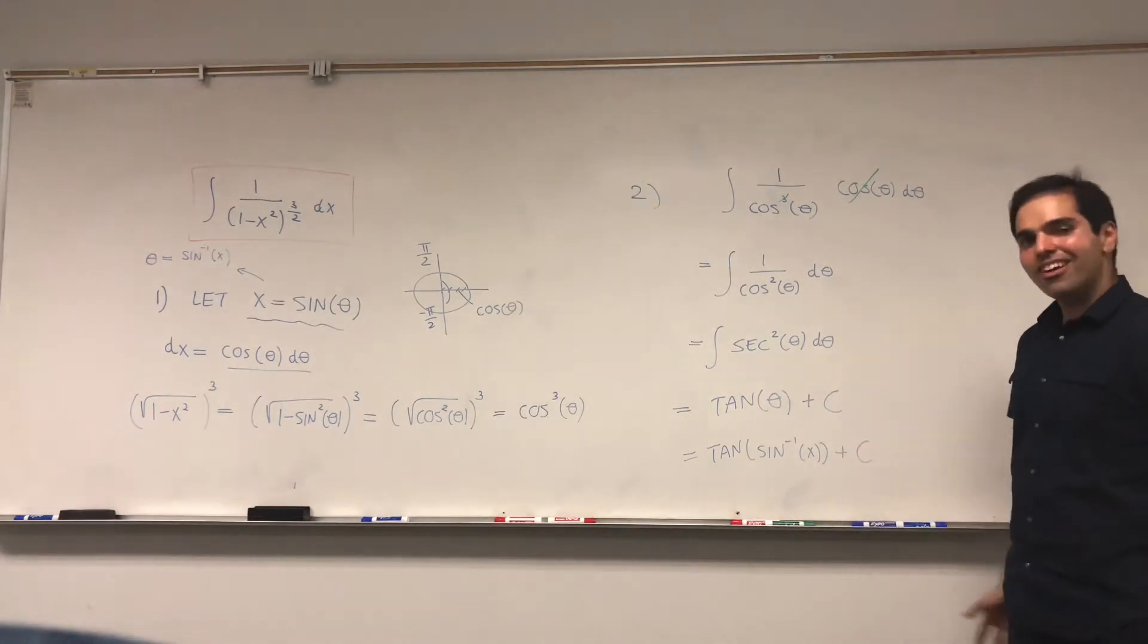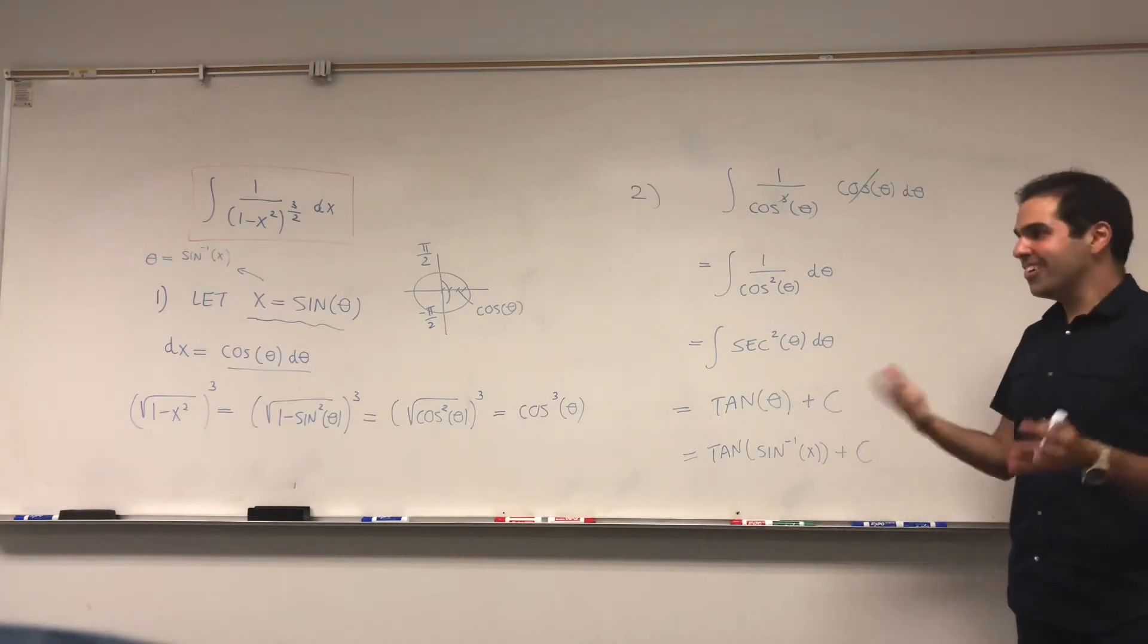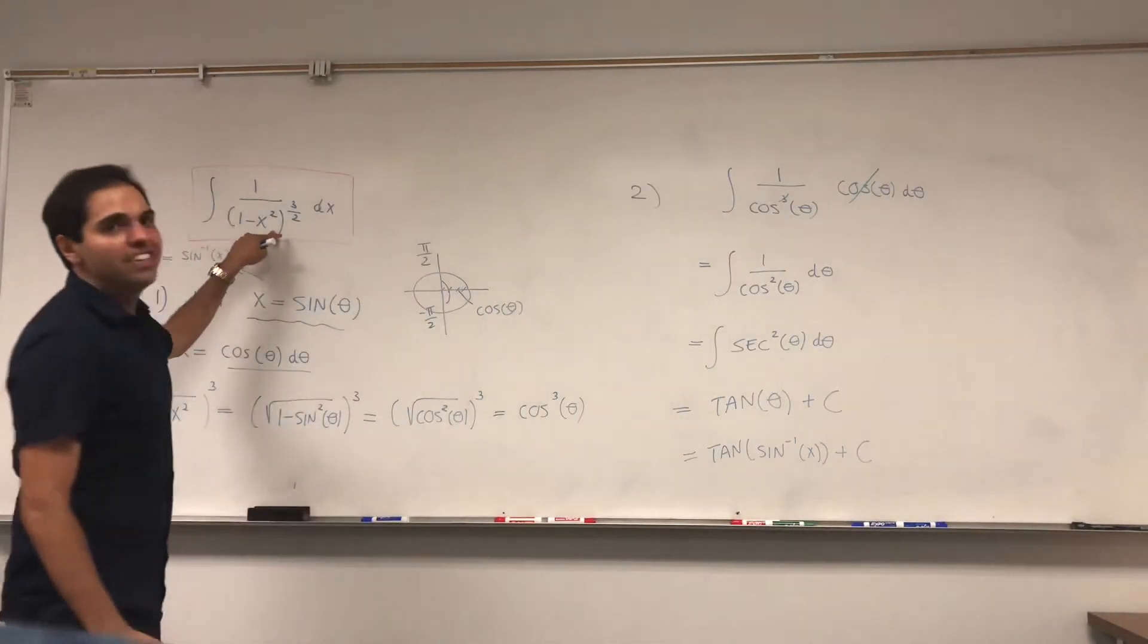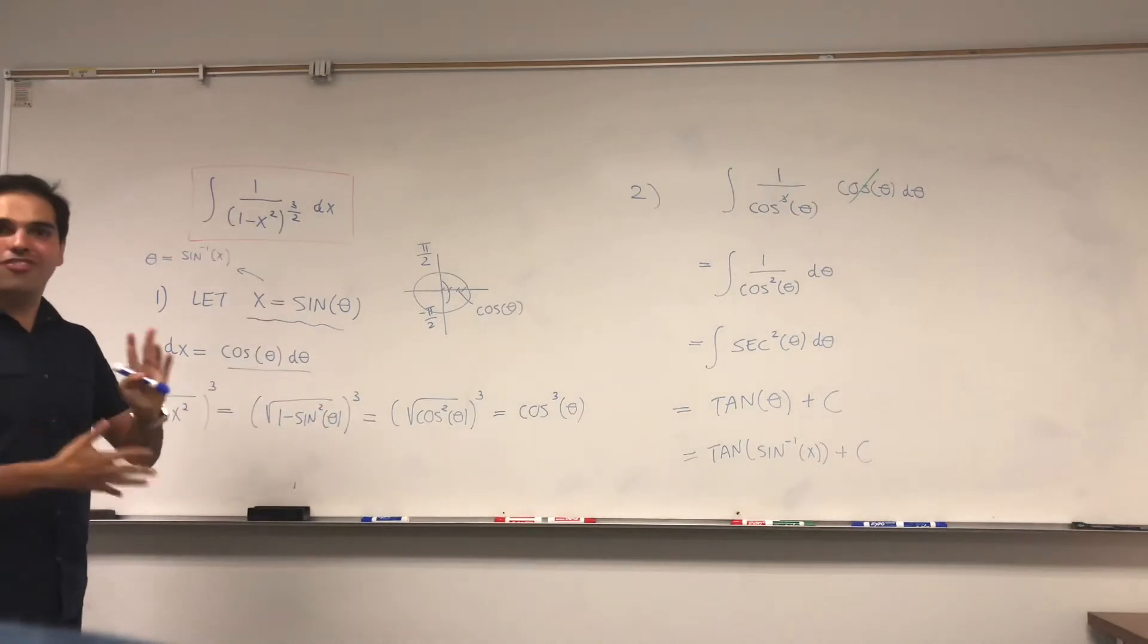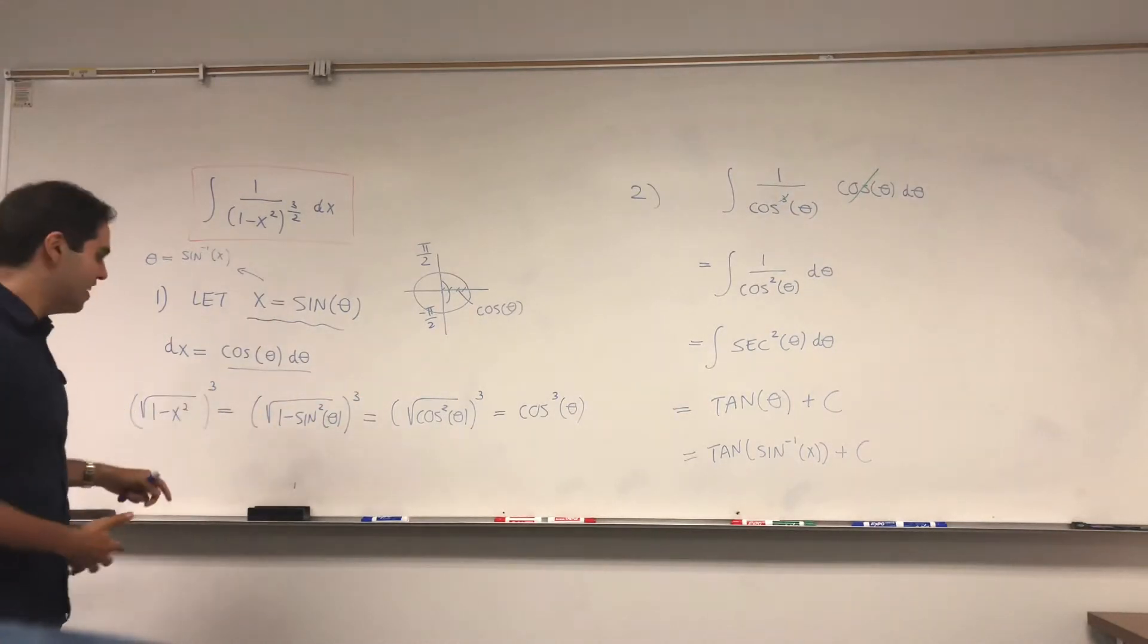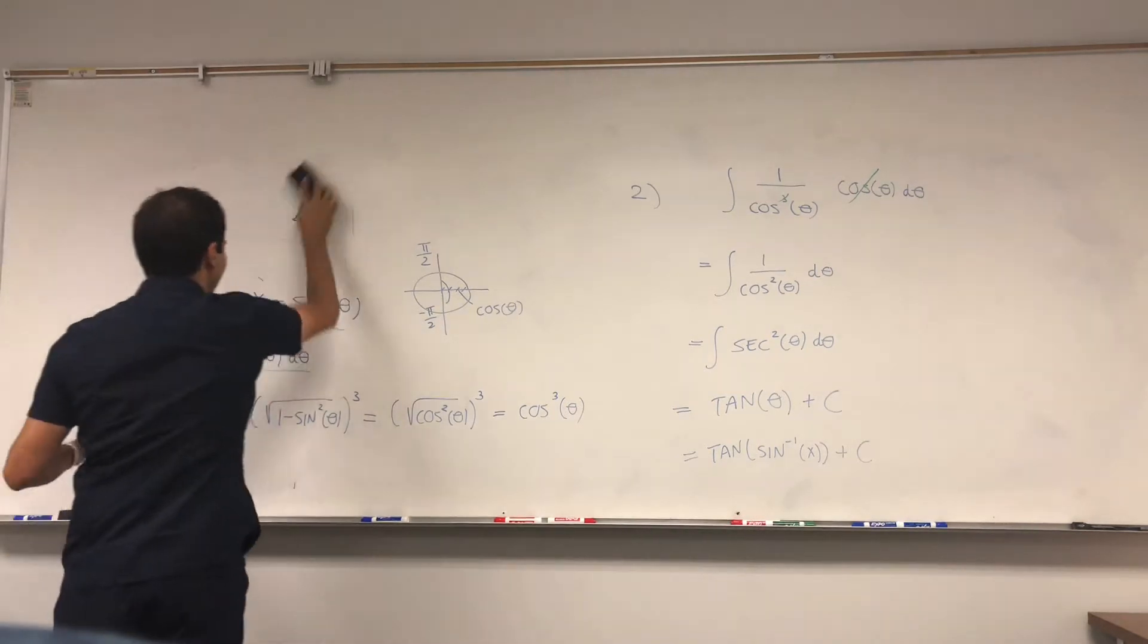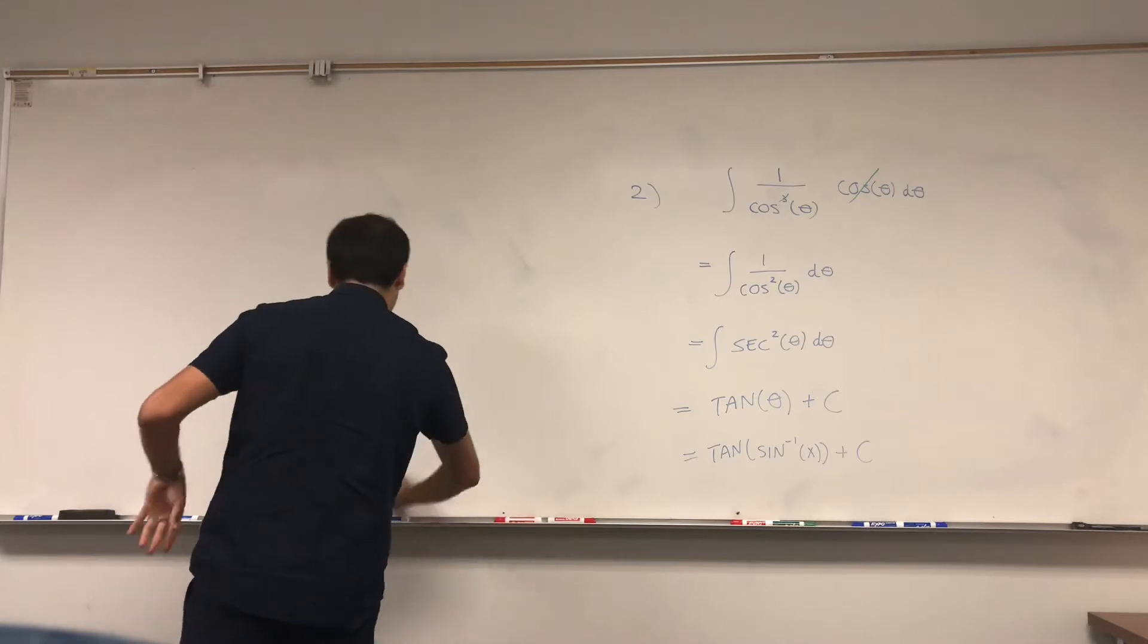If you like arcsine, this is a perfectly valid answer. But it turns out, because the beginning integral involves square roots and stuff, we can also write the final answer in terms of square roots. For this, we have to use the triangle method in calc 1A.